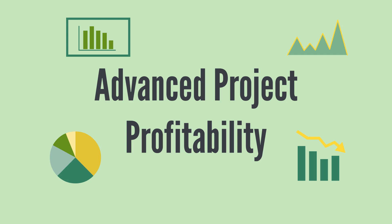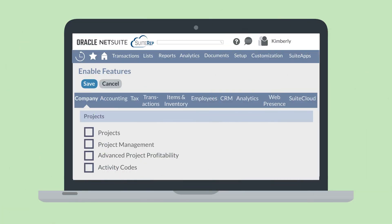First, you need to enable this feature. You can enable Advanced Project Profitability under the Project section of the Company tab and Enable Features.